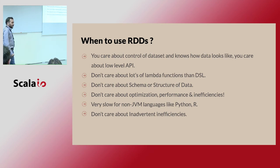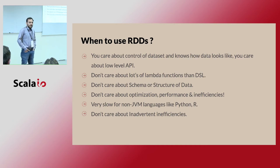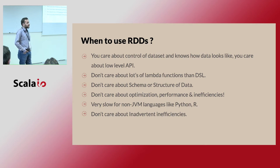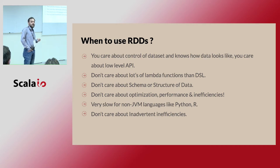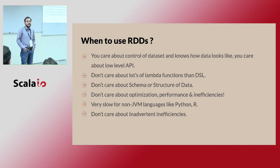When should you use RDD? Use it when you don't care about the structure of data, or when you don't know the structure. Use it when you don't care about schema, don't care about available lambda functions provided by Scala, and don't care about the optimization performance provided by the Tungsten and Catalyst engine. For non-JVM languages like Python and R, RDDs are very slow compared to DataFrames.